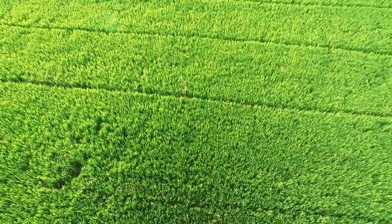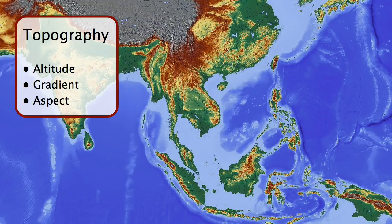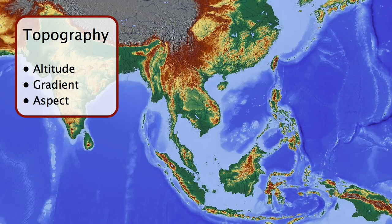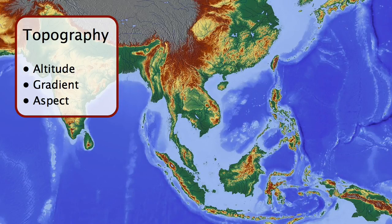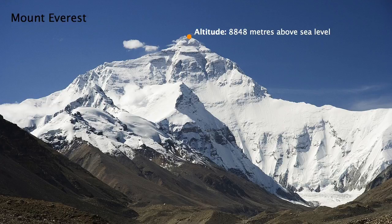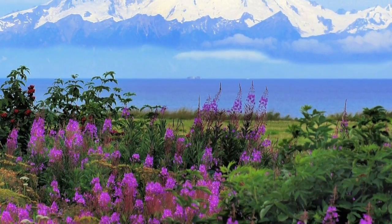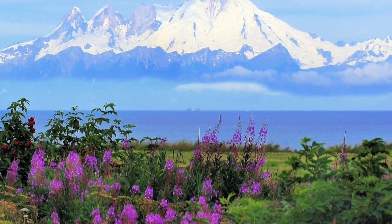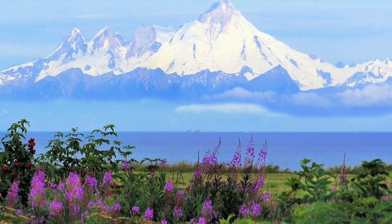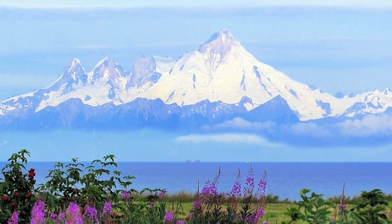The last major influencer on crop yield is topography. This describes the shape of the land and the specific landforms that are found in an area. Some key features of topography include altitude, gradient and aspect. Altitude is the height of a point above sea level — for instance, the top of a mountain has a higher altitude than its foothills. The temperature tends to drop as altitude increases; in other words, the higher up you go, the colder it gets. Since different crops are suited for different temperature ranges, they grow best at different altitudes.